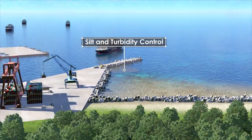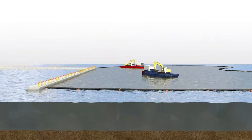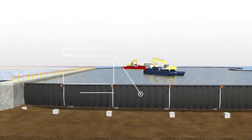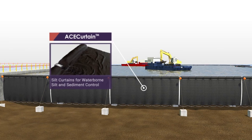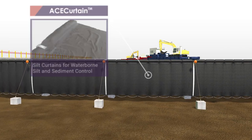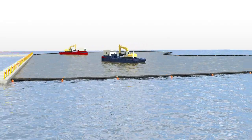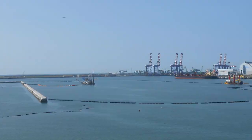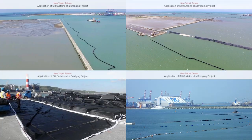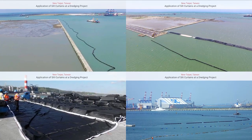Silt and Turbidity Control: ACE Curtain Silt Curtain is made up of ACE-TEX geotextile, floats and anchoring systems, providing excellent filtration capability and durability. It is easy to install and can be customized according to customer needs. It can control sludge, suspended or drifting matter in a designated area to protect water quality in the body of water.